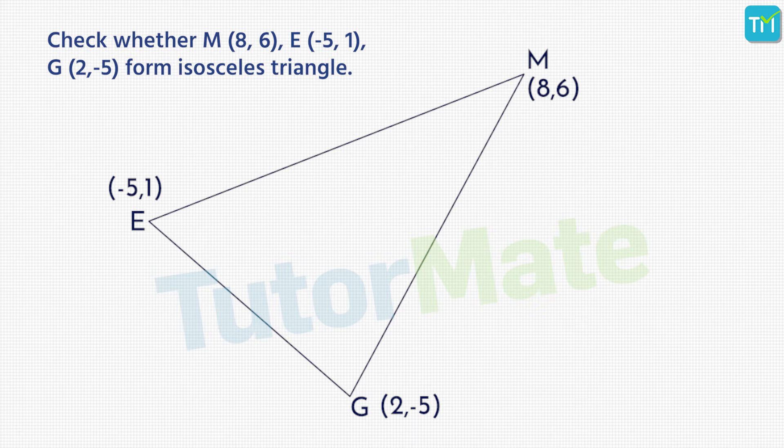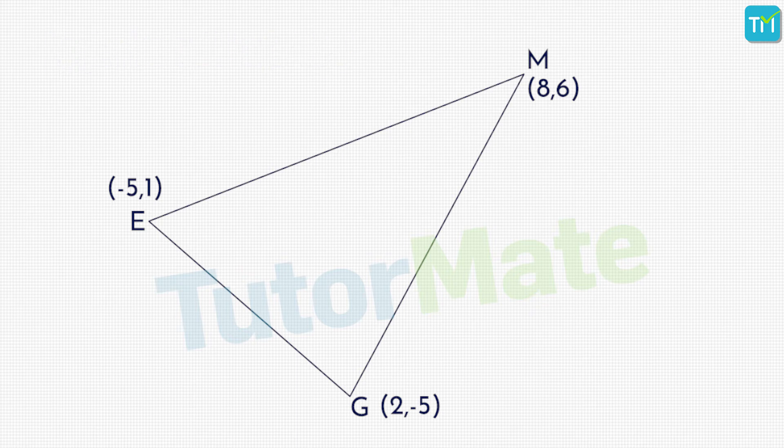Since we want to check whether the given points form an isosceles triangle, we will first have to find out whether two sides of the triangle MEG are equal or not, because that's what an isosceles triangle is, right. So we know that in an isosceles triangle two sides are equal, and so we will find out the lengths of all three sides of the triangle MEG by using the distance formula. So the three sides of the triangle will be ME, EG, and MG.